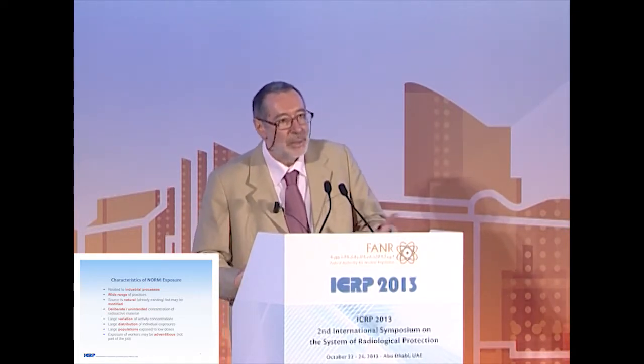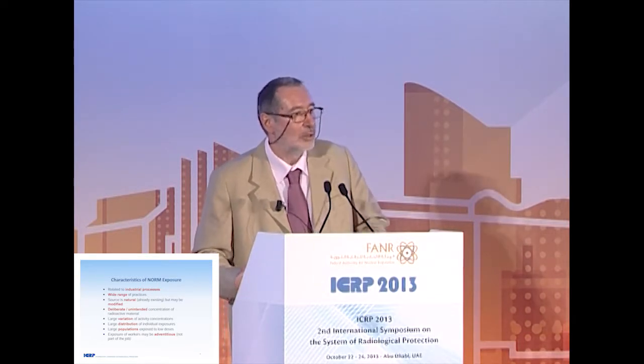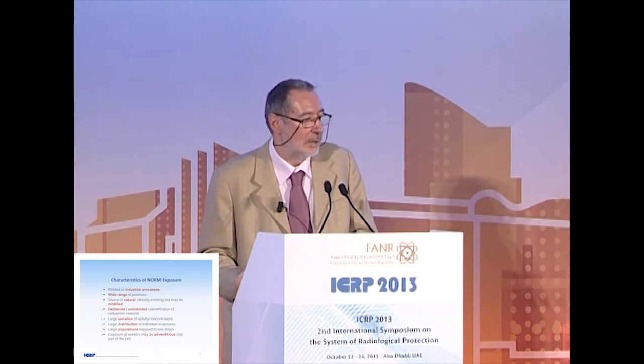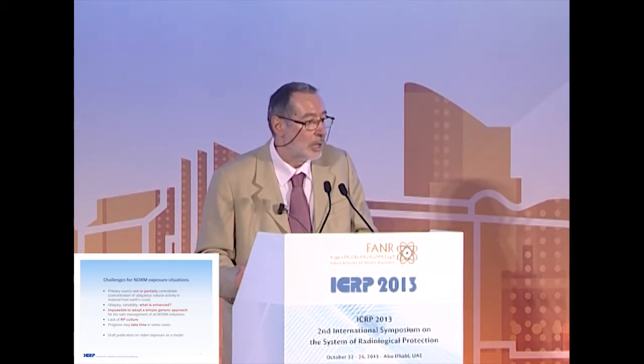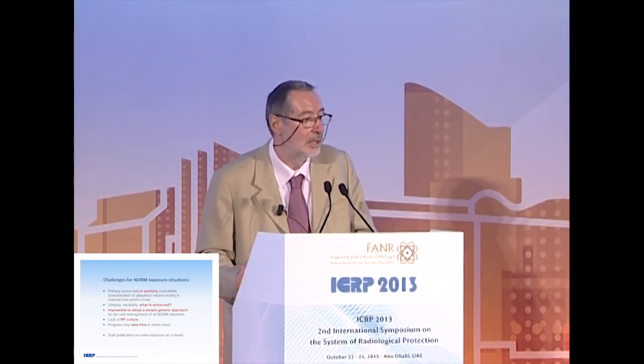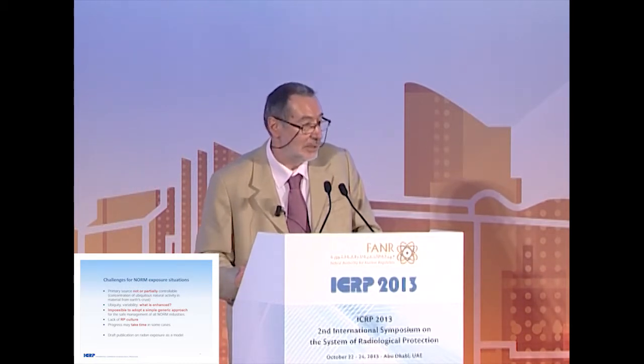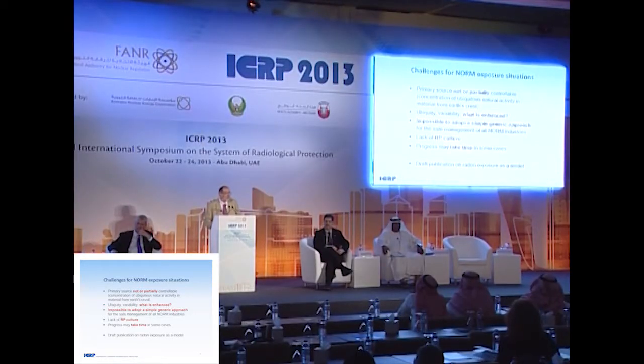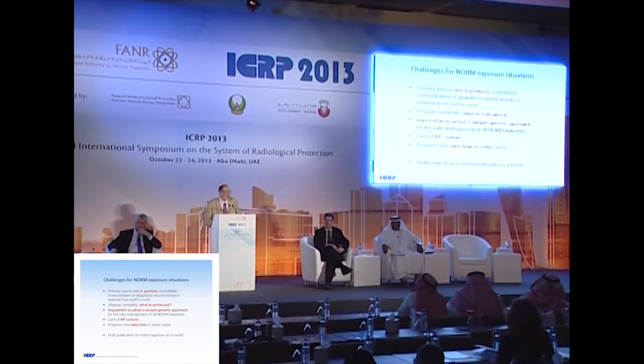The dose may be low or high. Generally they are low, but a large population is exposed to low dose — that is another characteristic. As far as workers are concerned, their exposure may be adventitious; it is not fully part of their job. This means we have many challenges to cope with the NORM exposure situation. The primary source is not or is only partially controllable. We have to take into account the ubiquity and variability of the source, which means it is not always easy to determine what is added by human activity. It is impossible to adopt a simple and generic approach because of the wide range of cases.